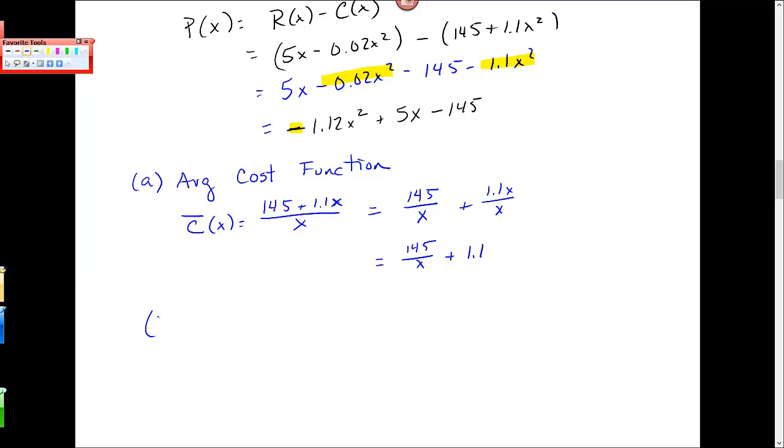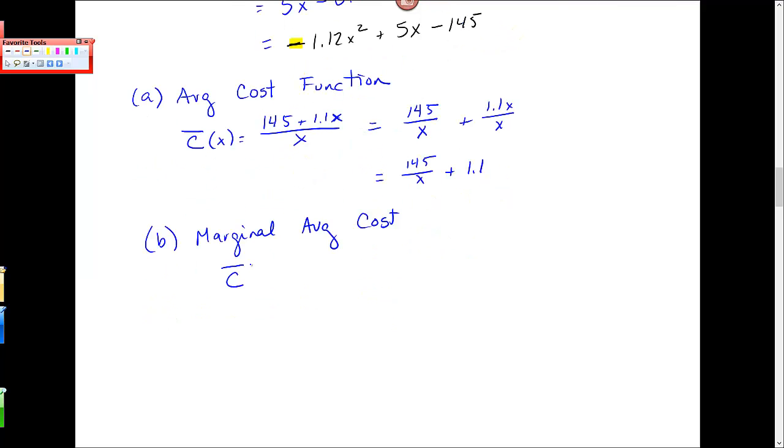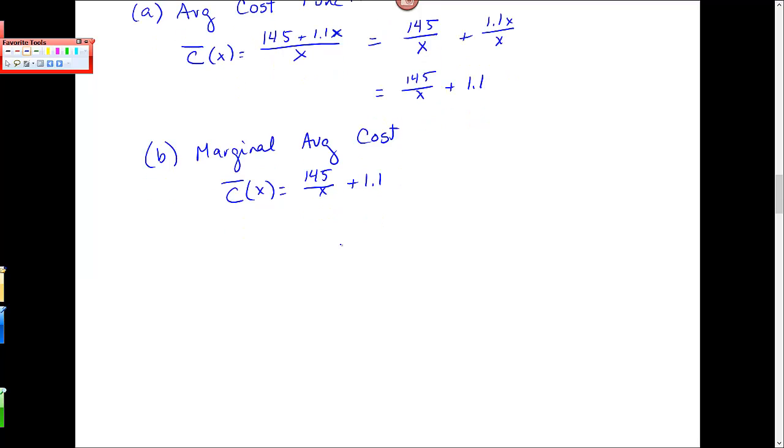So then if I want to find the marginal average cost function, I take that function C̄(x) = 145/x + 1.1 and I take the derivative. Now to do that I have to turn this 145 over x into something I can take the derivative of. So this C̄(x) is 145 and that over x is the same thing as x to the minus 1. So then I take the derivative. The negative 1 comes out front: -145x^(-2) plus 1.1. Or another form of this might be -145/x² + 1.1 is the marginal average cost function.